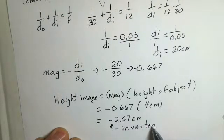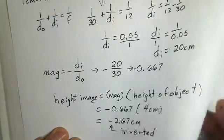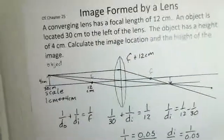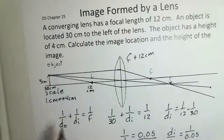It's upside down. We can see that in the diagram. Our object arrow is pointing upward, our image arrow is pointing downward.